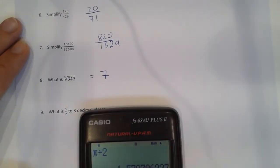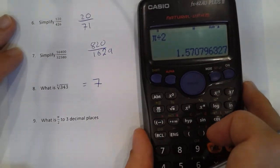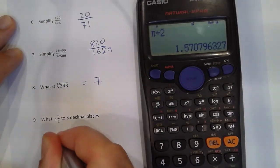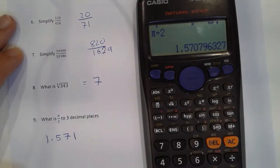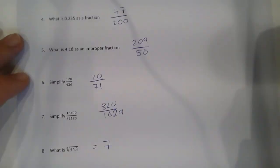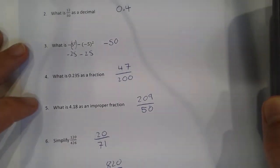So to 3 decimal places, let's have a look at that, that's 1.57 and the last one moves up to 1 because of the 7. So here's some basic tips and tricks to help you on calculator-style questions.